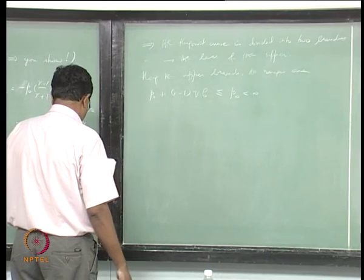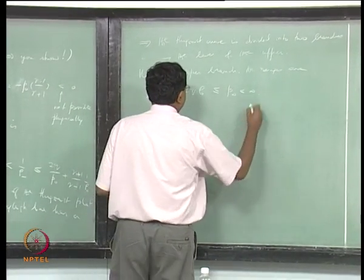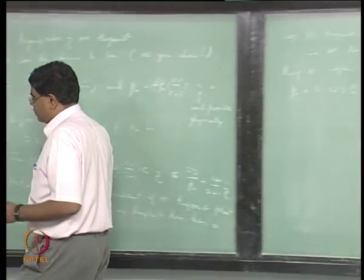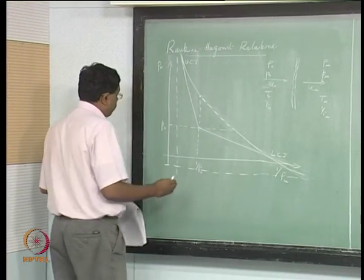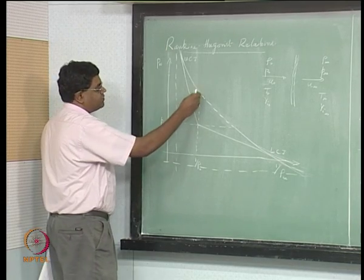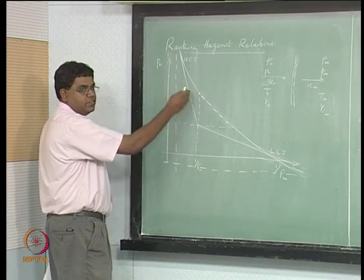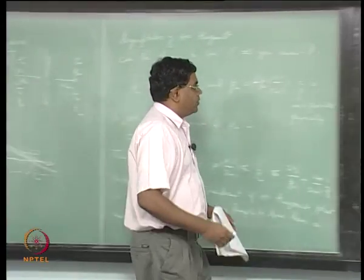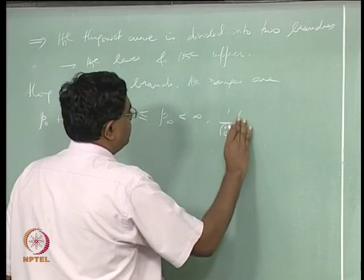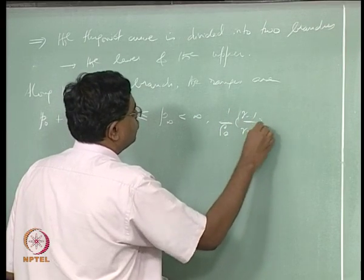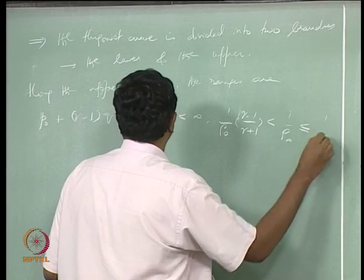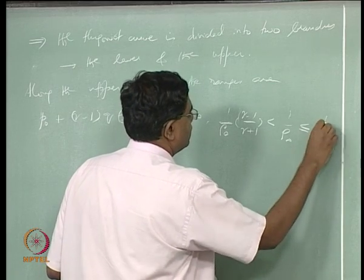As for 1/ρ∞ along the upper branch: the lowest value is the asymptote and the highest value is 1/ρ₀ itself, which is easy to figure out. So we can write: (1/ρ₀)(γ−1)/(γ+1) < 1/ρ∞ ≤ 1/ρ₀.